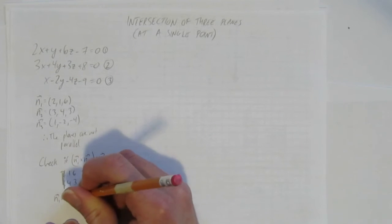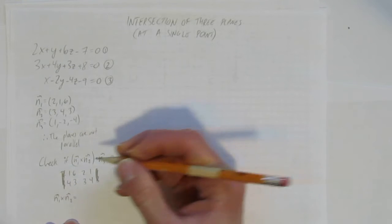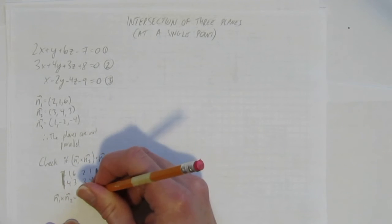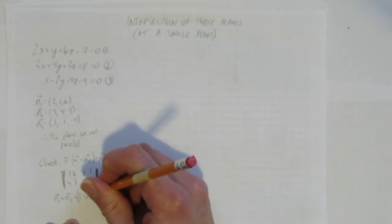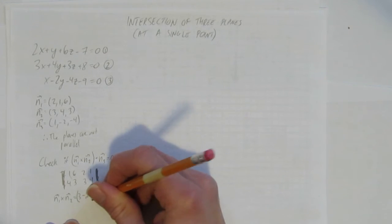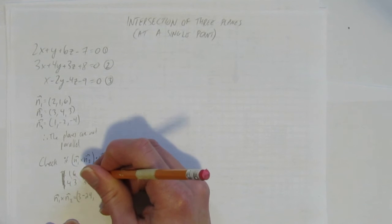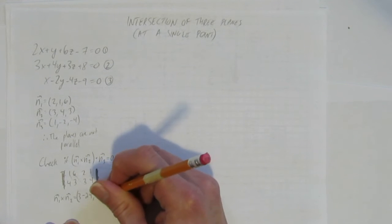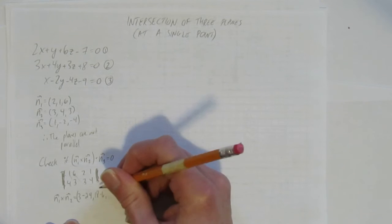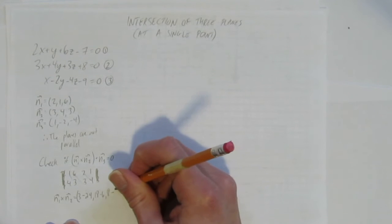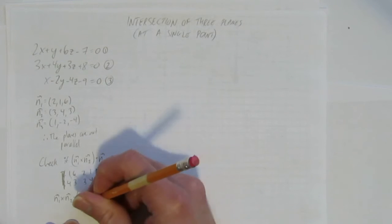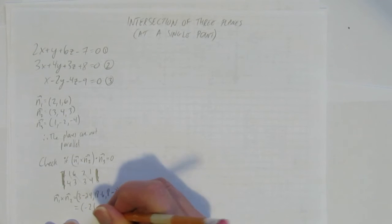n1 cross n2 is equal to this times this minus that times that. So this is 1 times 3 minus—oh, I need a bracket here—1 times 3 minus 6 times 4, that's 3 minus 24, and then 6 times 3 minus 2 times 3, so that's 18 minus 6. And finally, 2 times 4 minus—that's 8 minus 1 times 3, that's 3. So I get the cross product is (-21, 12, 5).